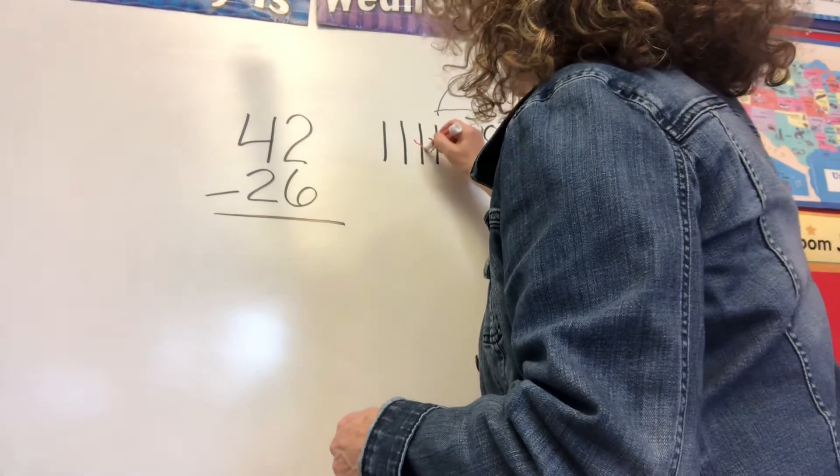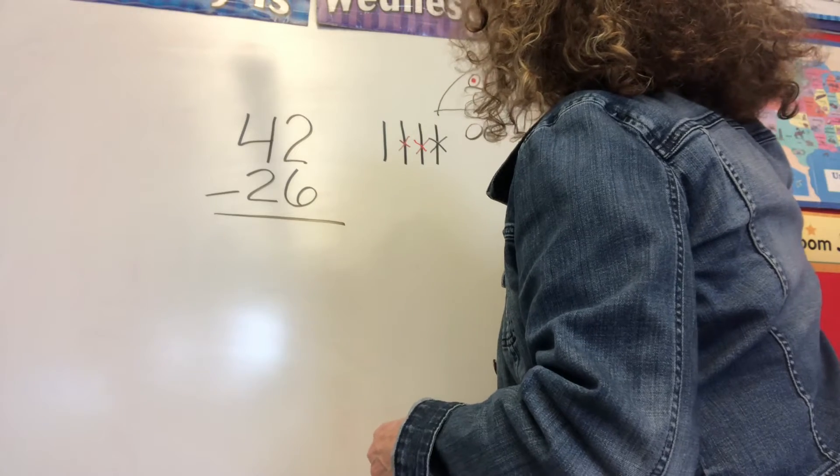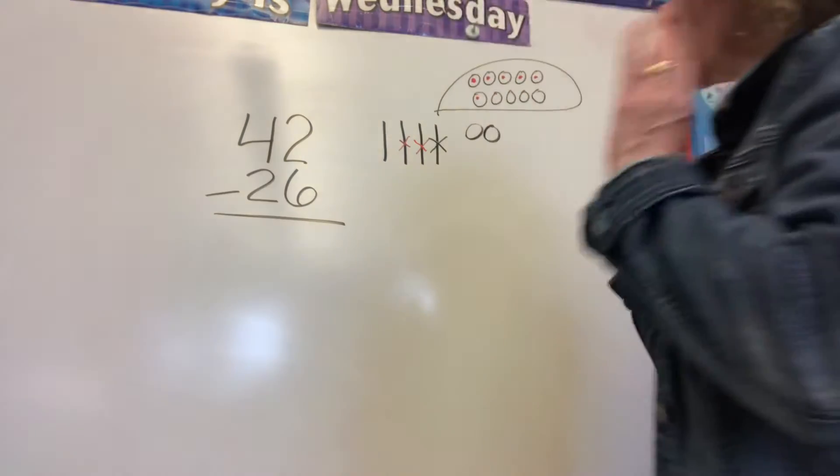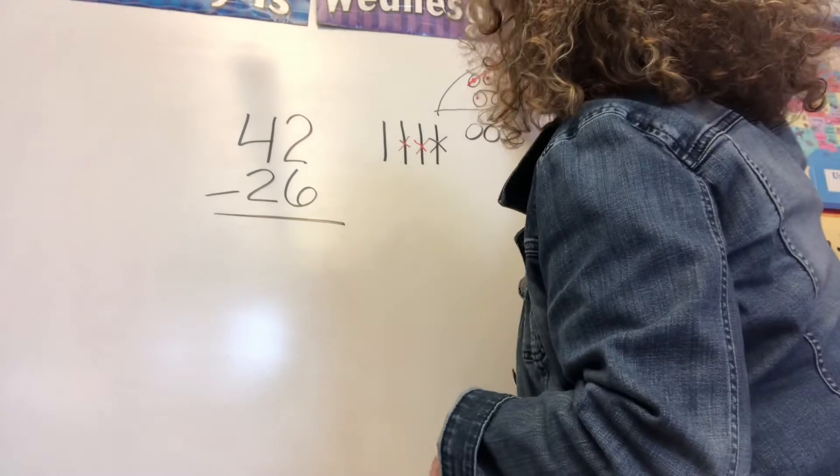I'm going to get rid of 10, 20. I'm going to put dots 1, 2, 3, 4, 5, 6. So I got rid of everything with red. Actually, I like to cross it out.